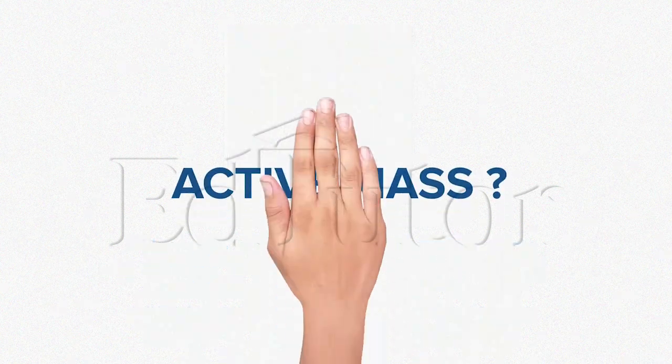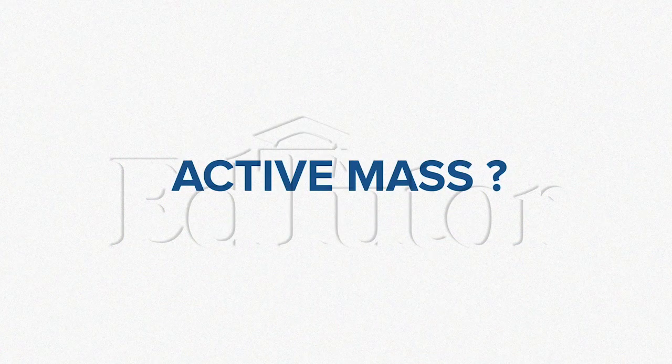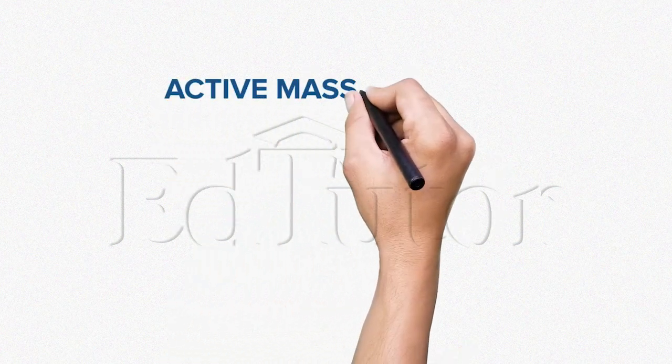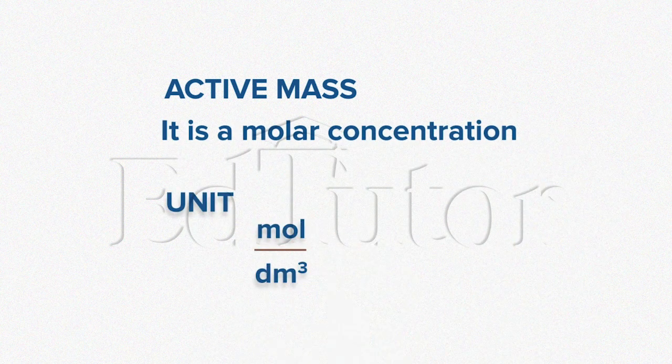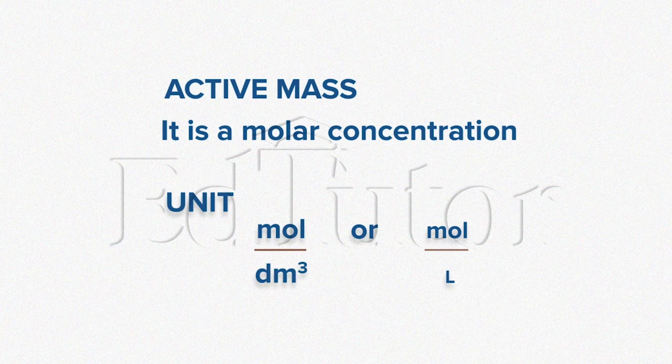So, what is an active mass? An active mass is defined as the molar concentration. Its units are mole per decimeter cube or mole per liter.